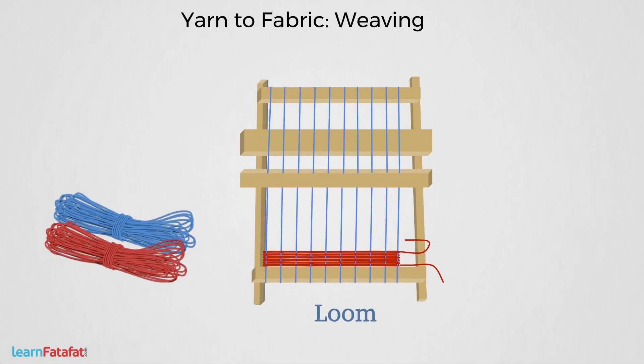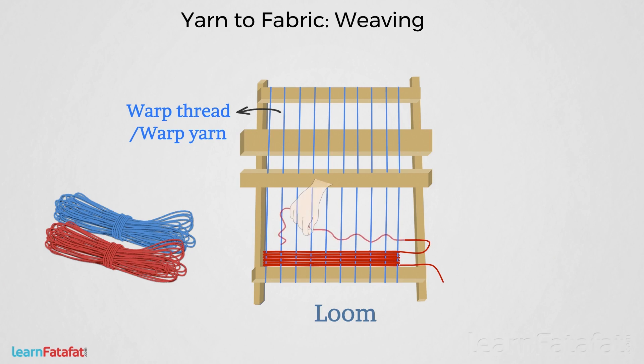Basically, a loom is a structure which is used to give support to your weave. A tightly held thread or yarn strung over the loom vertically is the warp thread or warp yarn. Another thread which is drawn through and inserted over and under the warp thread is the weft thread or weft yarn.